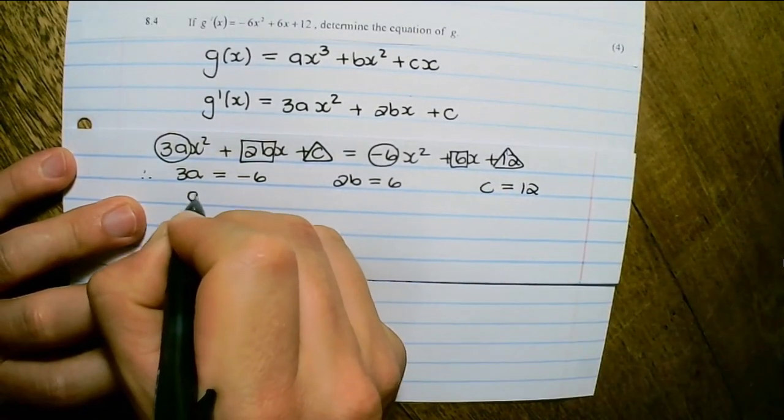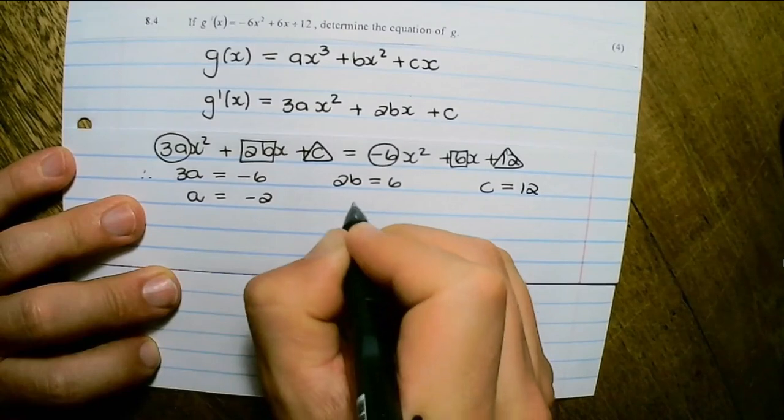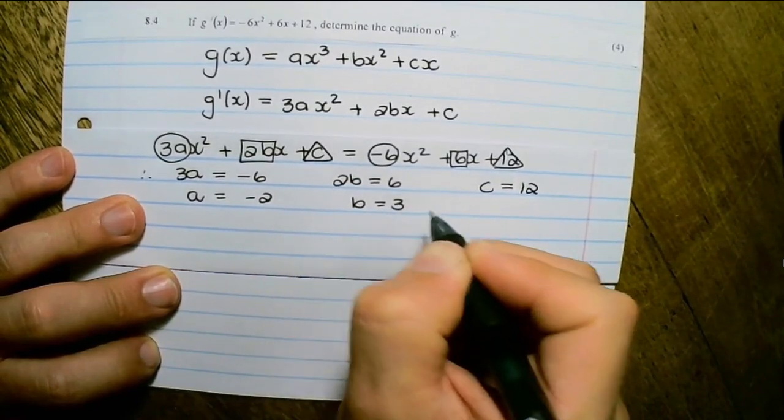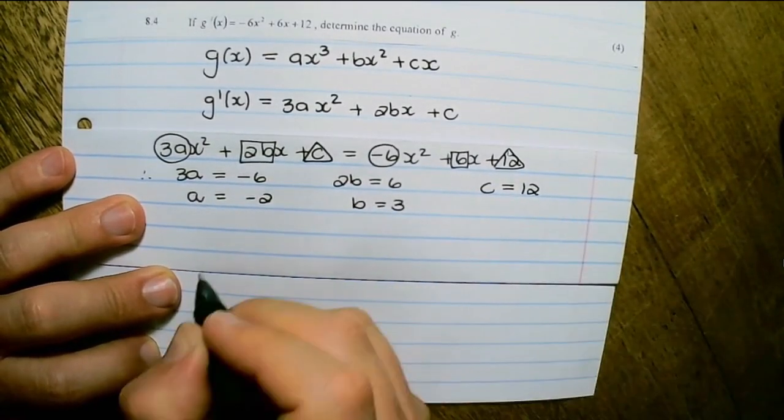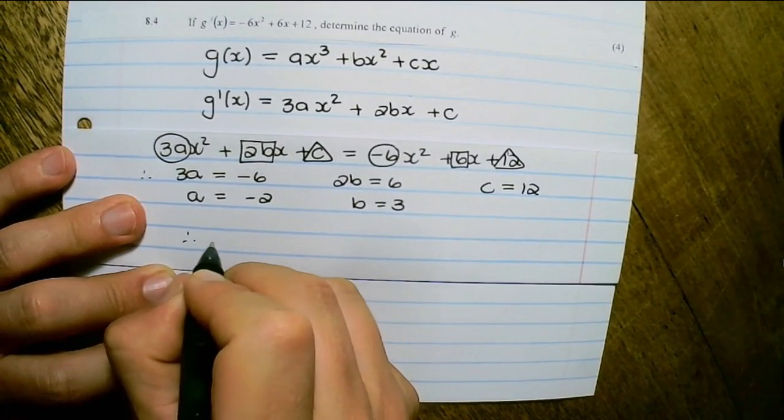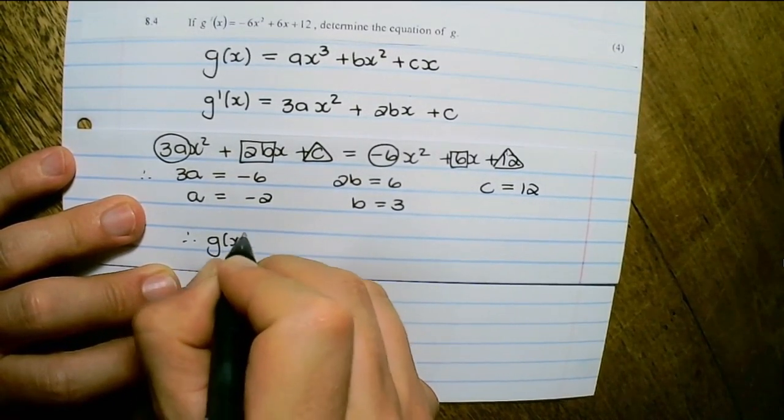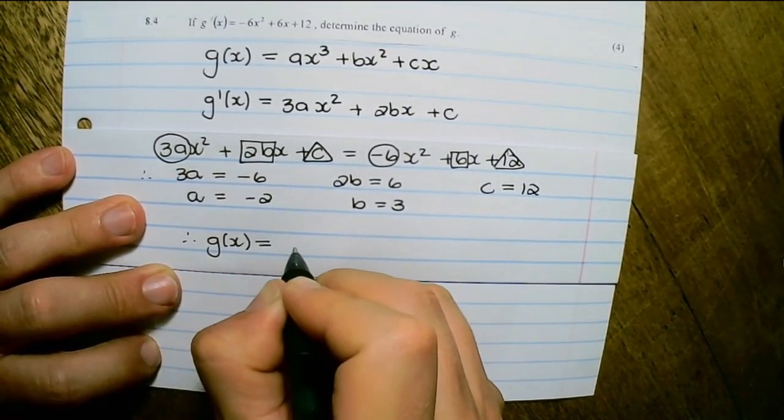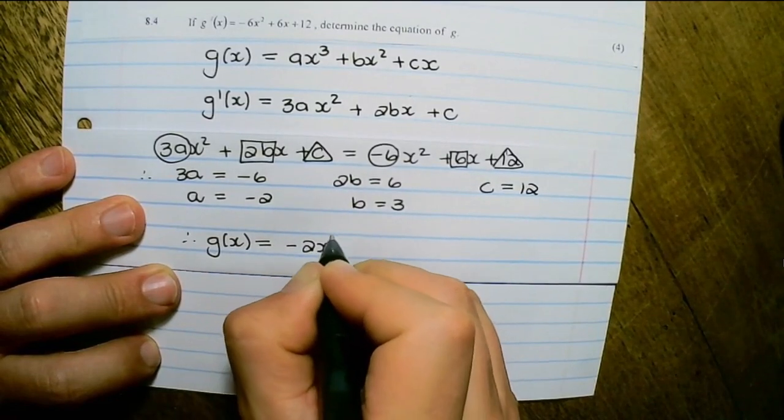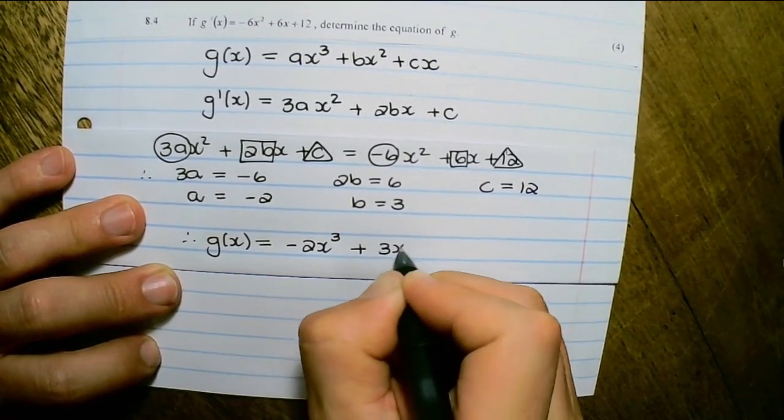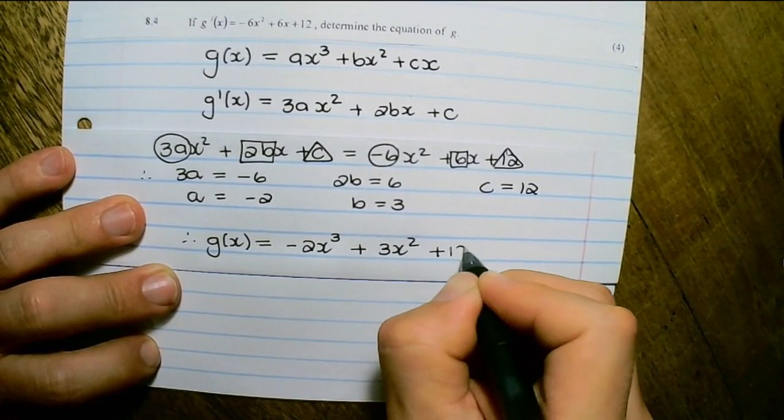That will make a equals negative 2 and b equals 3. And we already have c. Therefore, g(x) equals negative 2x cubed plus 3x squared plus 12x.